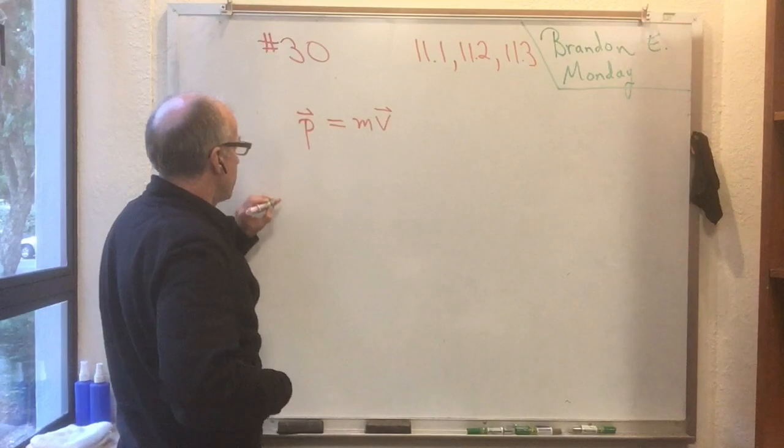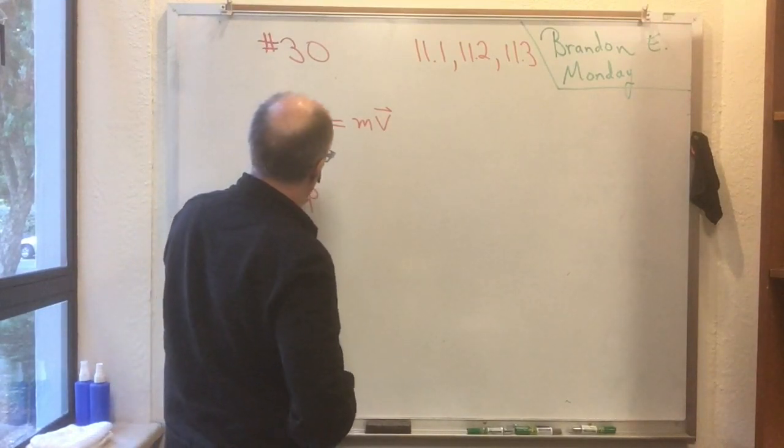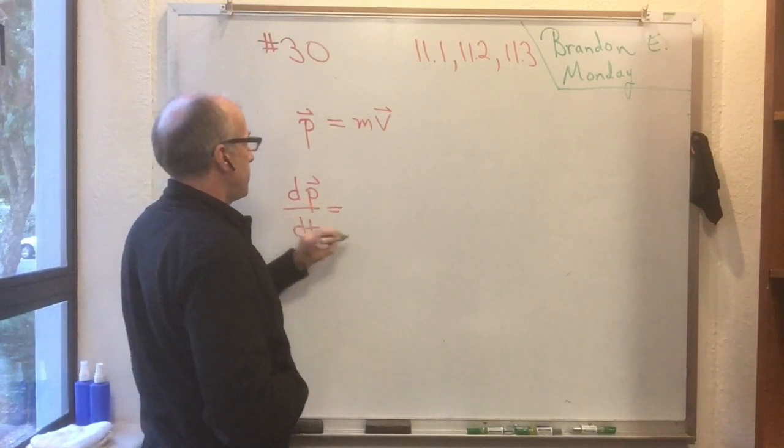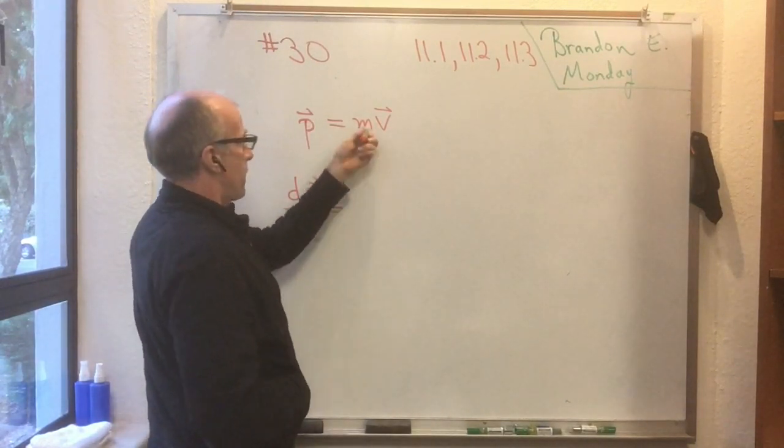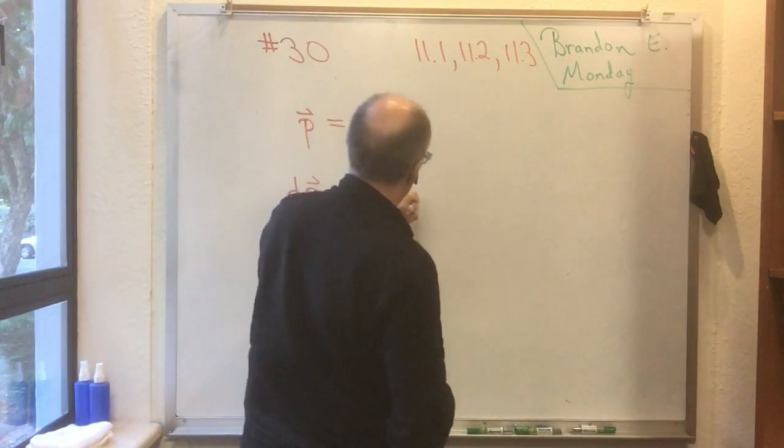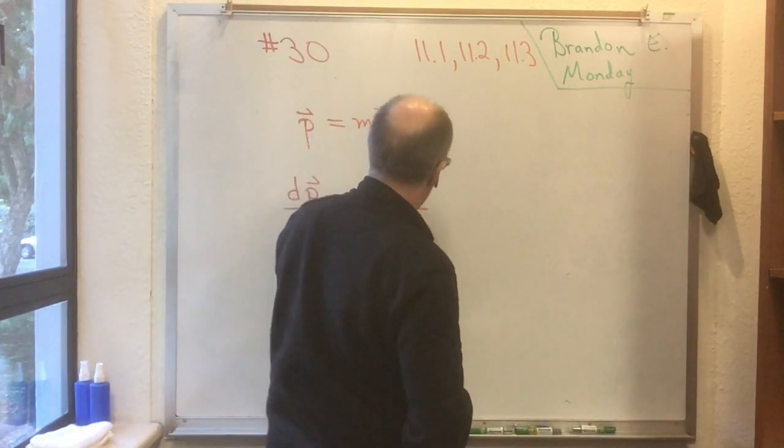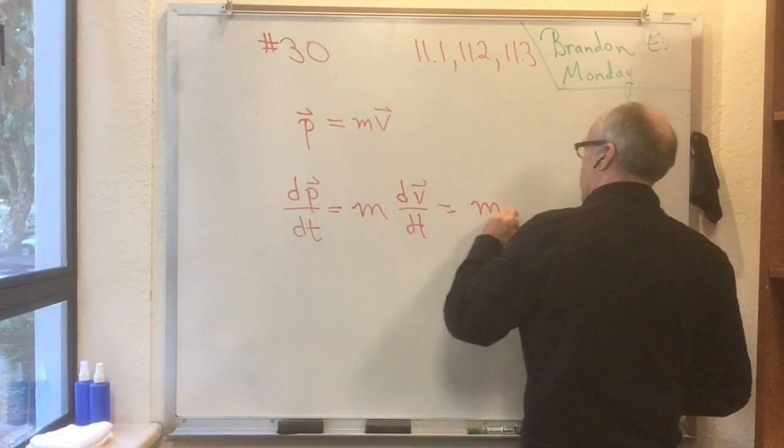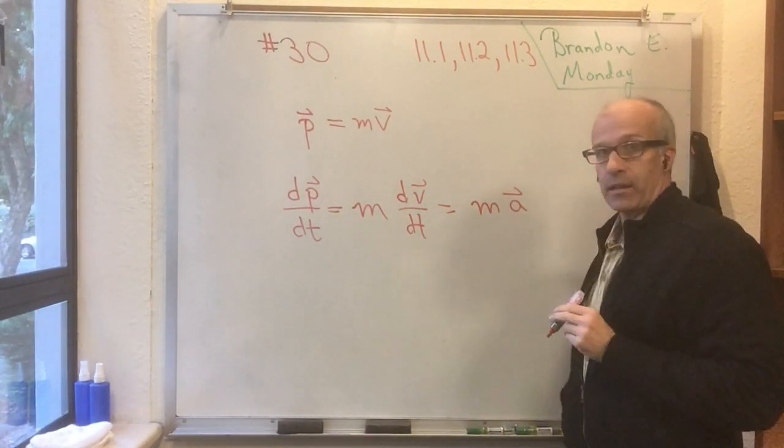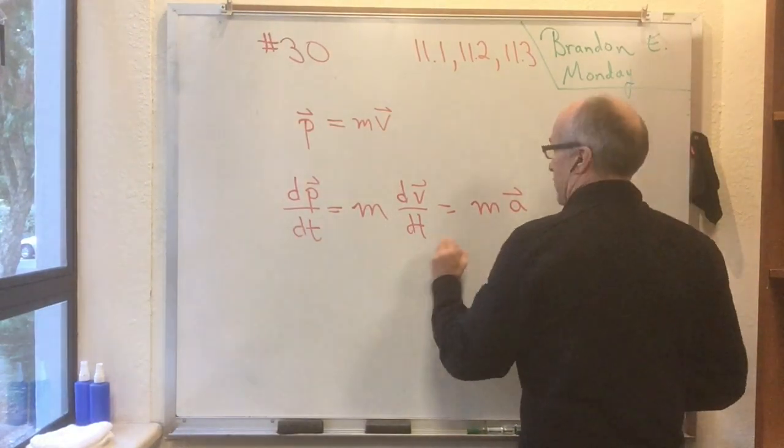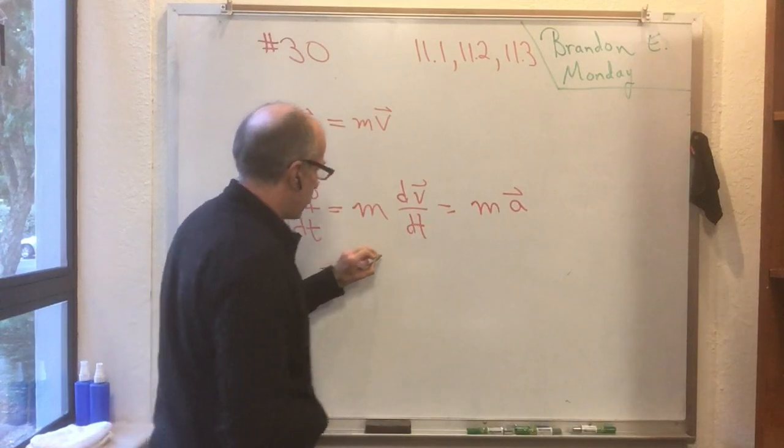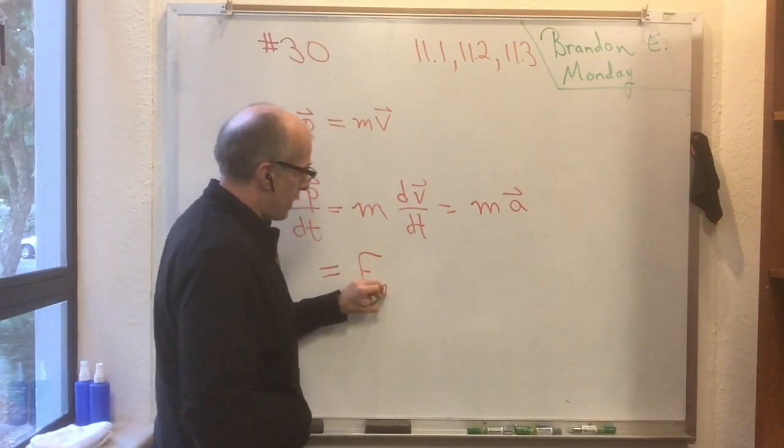So then we can calculate dp/dt. Well, dp/dt is, if M is a constant for a particle, M times dv/dt. And dv/dt, of course, is the acceleration. And now we apply Newton's second law. And so this is equal to the sum of all the forces that are acting on the particle, which we could call F_net.